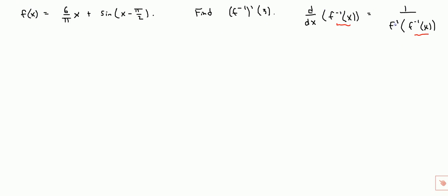So in the formula we've got a f prime, so we need to take the derivative of f of x. So f prime of x. Alright, so we've got 6 over pi times x. The derivative of that is just 6 over pi.